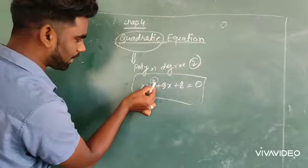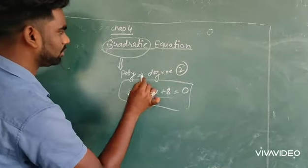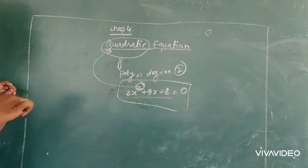In this equation, the highest power is 2. So, the degree of this equation is 2. That is why it is a quadratic equation.